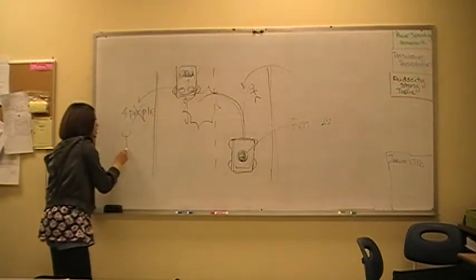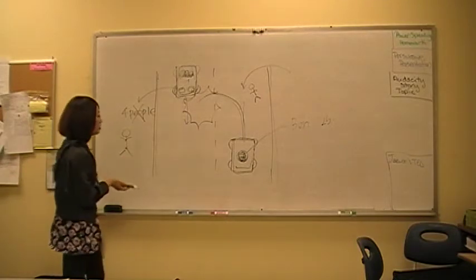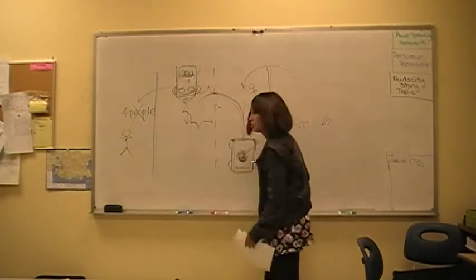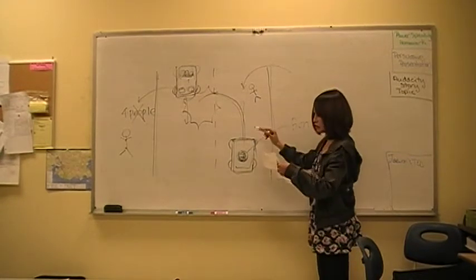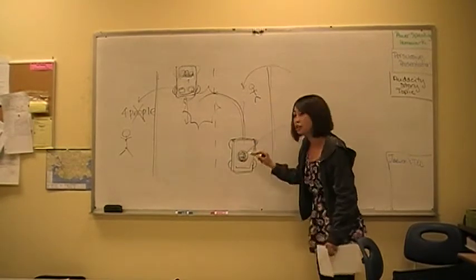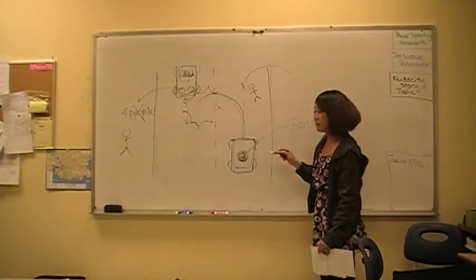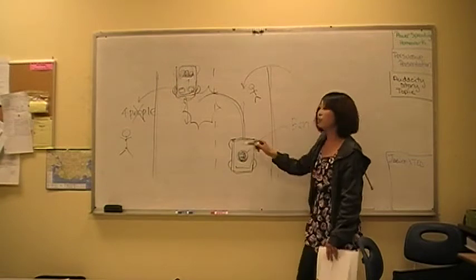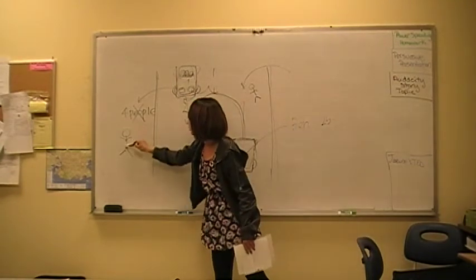Only one child is still alive. But anyway, he didn't, no, sorry, he didn't intend to kill the 4 people, but eventually he killed the 4 persons. And only one child is still alive.